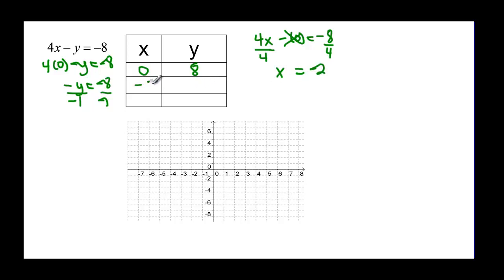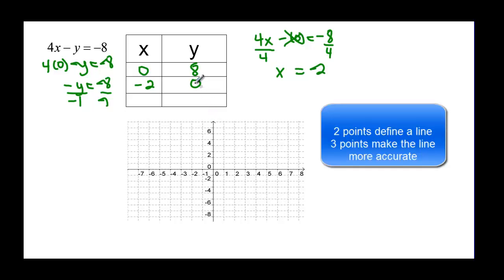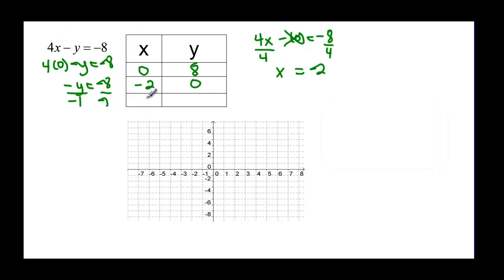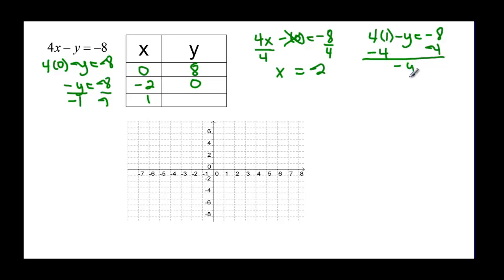So x is negative two and y is zero. You can pick either x or y — it doesn't matter which one. We want to pick points to find nice numbers if at all possible. Since y is by itself, I'm going to pick another x value. Let's let x be one. So four times one minus y equals negative eight. I have four, so I subtract four from both sides, giving negative y equal to negative twelve. Dividing by negative one gives y equal to positive twelve.